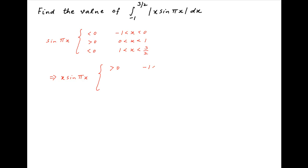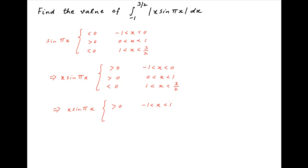This implies that x·sin(πx) is positive when x lies between -1 and 0, because both x and sin(πx) are negative in that range. x·sin(πx) is positive when x lies between 0 and 1, because both x and sin(πx) are positive. And x·sin(πx) is negative when x lies between 1 and 3/2, because x is positive and sin(πx) is negative. Therefore, x·sin(πx) is positive on [-1, 1] and negative on [1, 3/2].